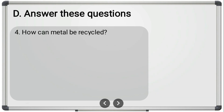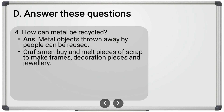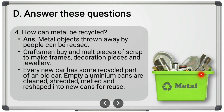The last question is: 'How can metals be recycled?' Metal objects thrown away by people can be reused. Craftsmen buy and melt pieces of scrap to make frames, decoration pieces, and jewelry. Every new car has some recycled parts of an old car. Empty aluminum cans are cleaned, shredded, melted, and reshaped into new cans for reuse. Various metallic vessels and parts can be recycled.